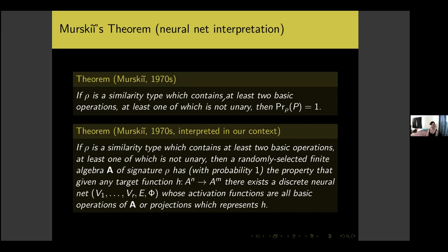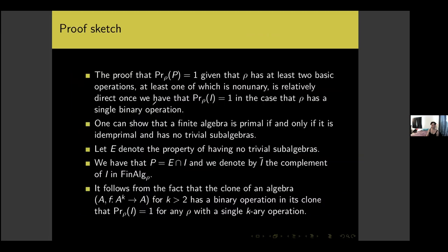Are there any questions? I am going to now give a sketch of the proof of Mirsky's theorem. The proof that a randomly chosen finite algebra is primal with probability 1, given that rho has at least two basic operations at least one of which is non-unary, is relatively direct once we know that the probability that such an algebra is idempotent primal is 1 in the case that rho has only a single binary operation.